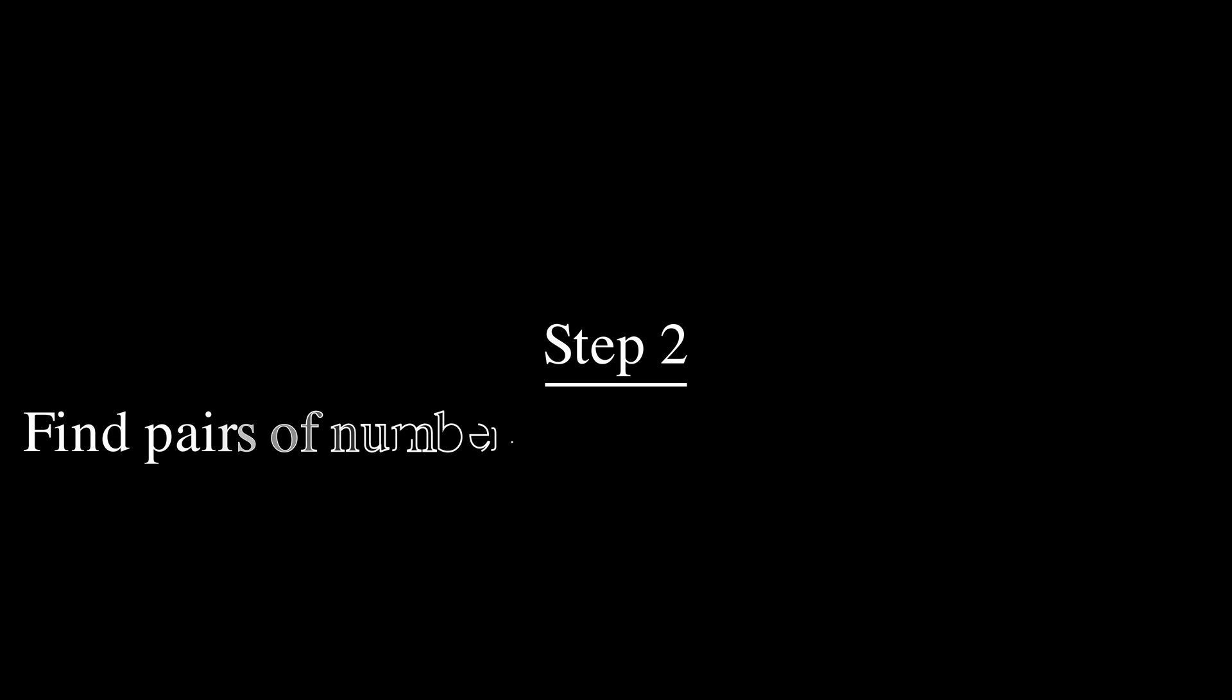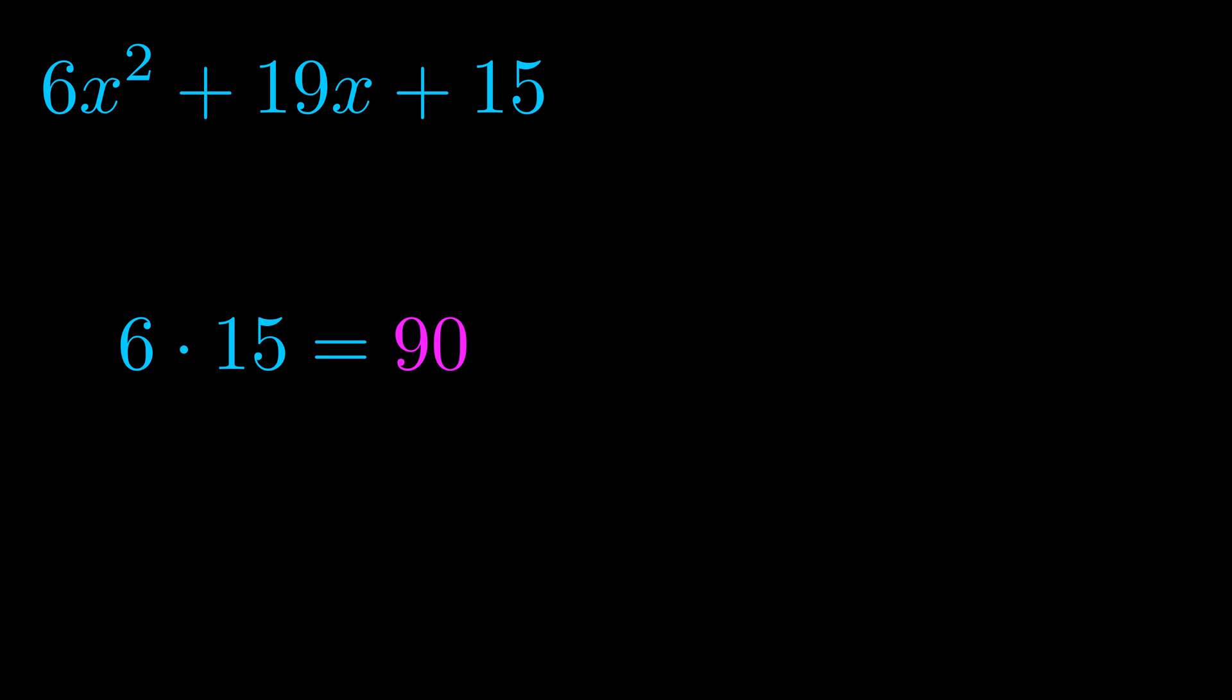Step two is to try to find all of the pairs which multiply to this number. Now turns out you don't really need to find all of them but go ahead and write down as many numbers as you can that multiply to the magenta value for now. Pause the video and resume when you're ready to continue.